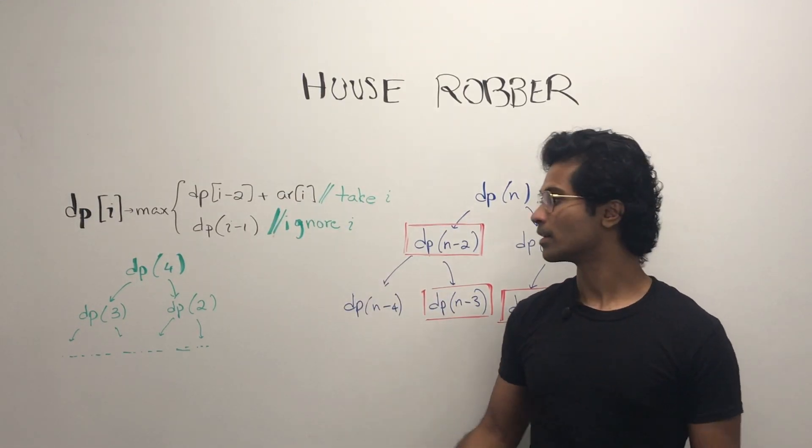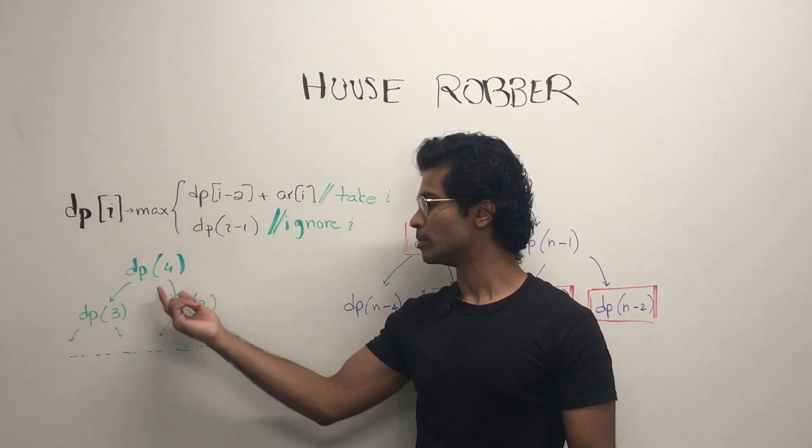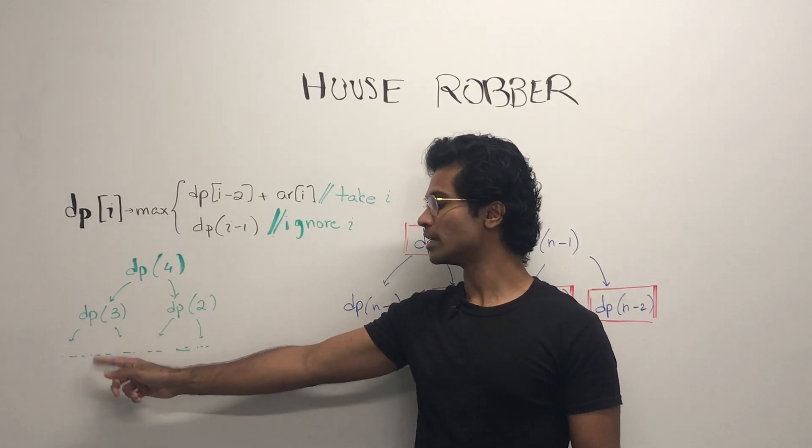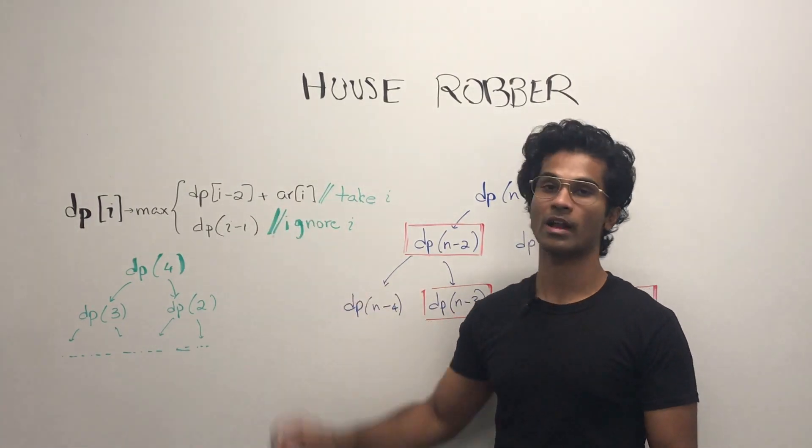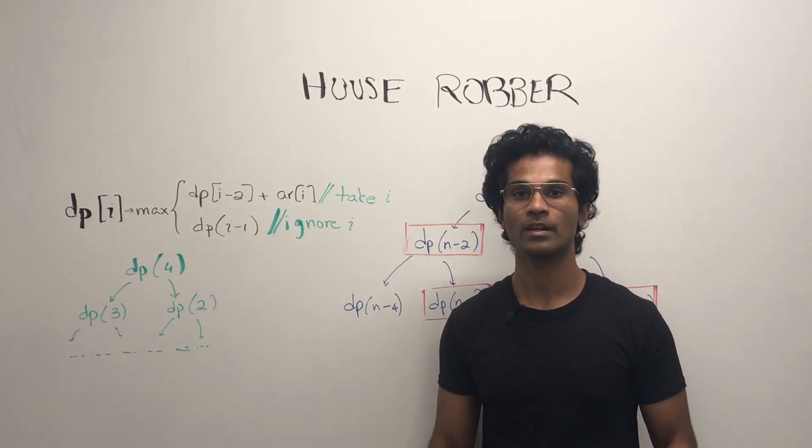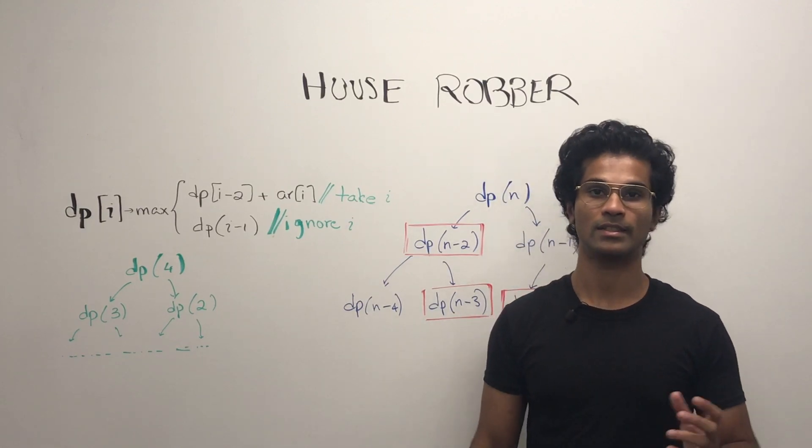dp of i is going to be the maximum of either this or this. For our input of 4, which is the length of the array, dp of 4 is going to ask dp of 3 and dp of 2. You can ignore the plus ar for now. We're just looking at the DAG recurrence relationship.